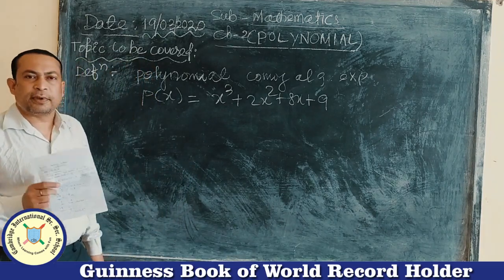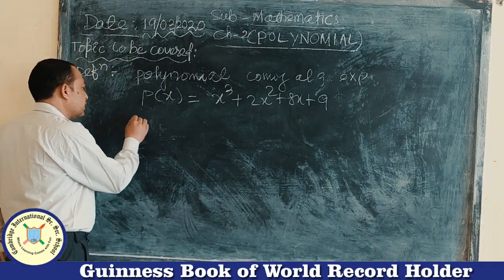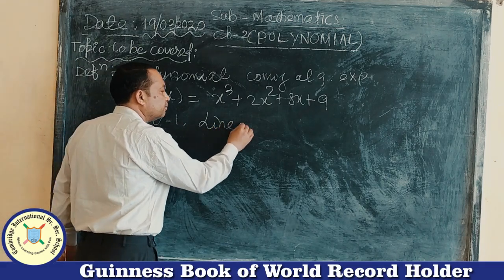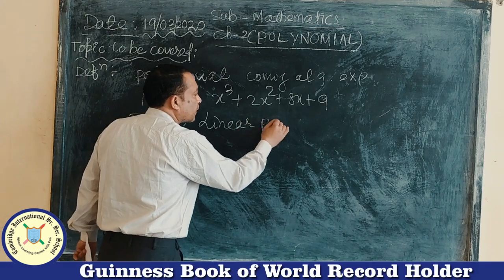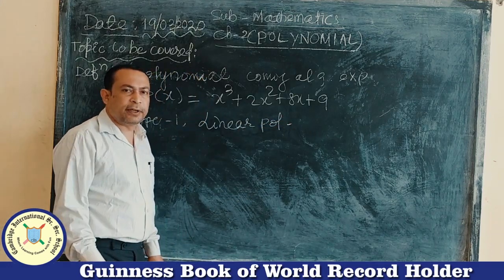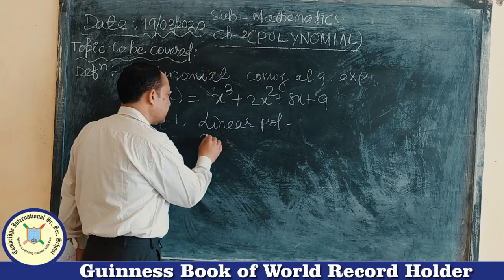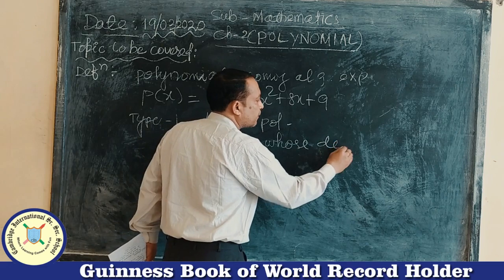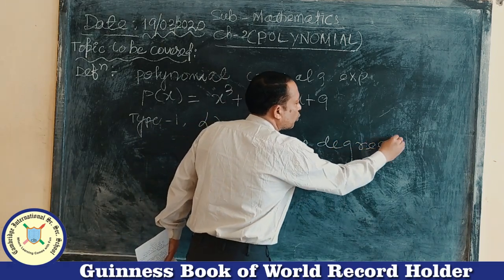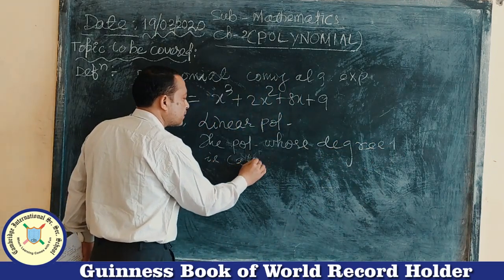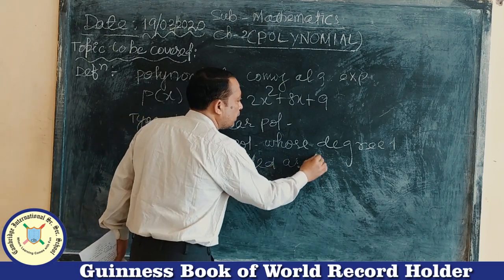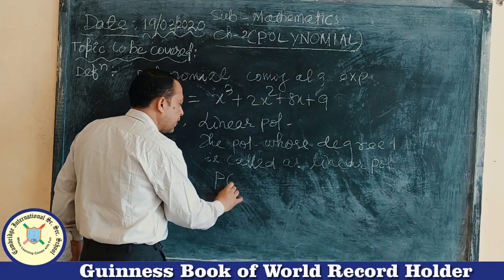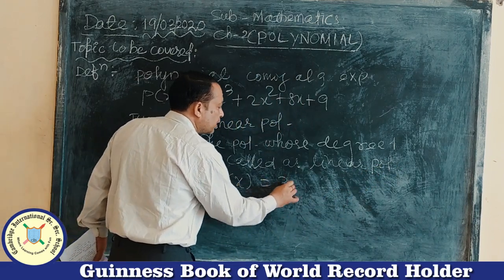There are so many types of polynomials. Type 1: Linear Polynomial. The polynomial whose degree is 1 is known as a linear polynomial. For example, P(x) = 3x + 2. When this polynomial is solved, we get one zero.